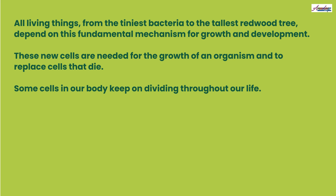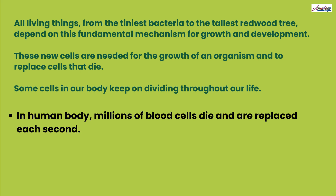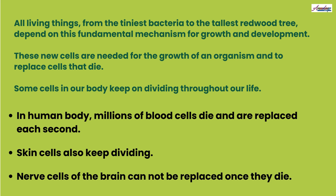In our body, some cells keep dividing throughout life. For example, in the human body, millions of blood cells die and are replaced each second. Skin cells also keep dividing. However, our brain's nerve cells cannot be replaced. Once they die, this is why the body can heal injuries in all parts except the nervous system.